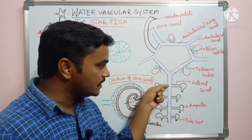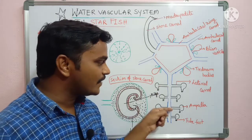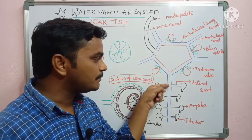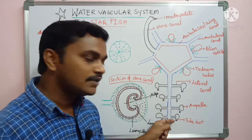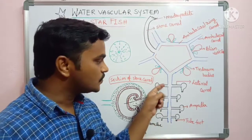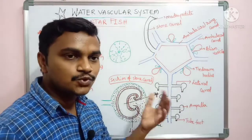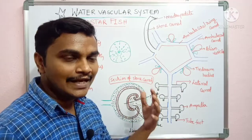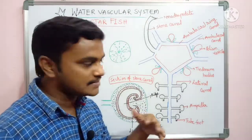The lateral canals vary in length — some are long and some are short. Every arm contains two to four lateral canals and correspondingly two to four tube feet on average.